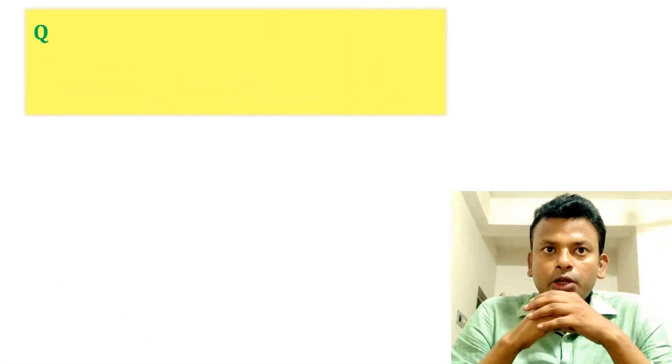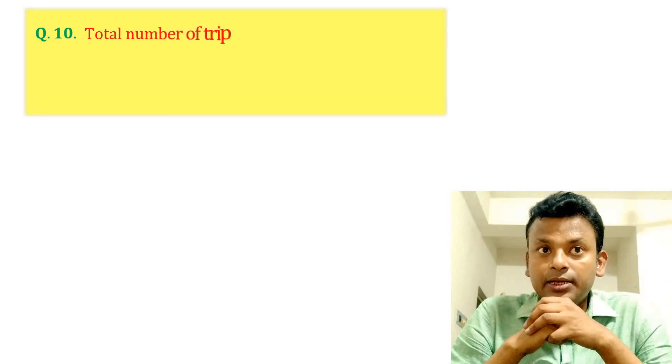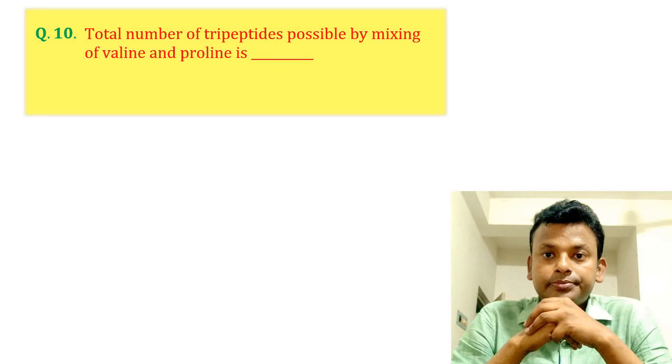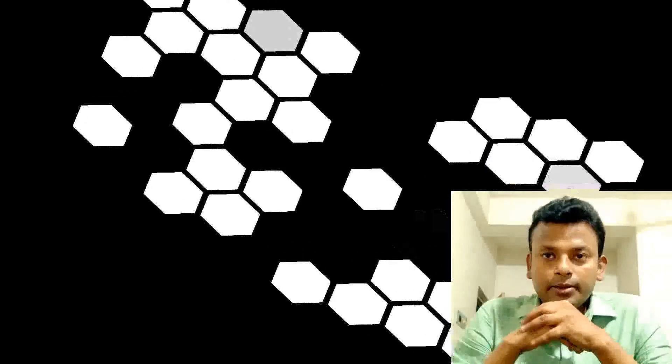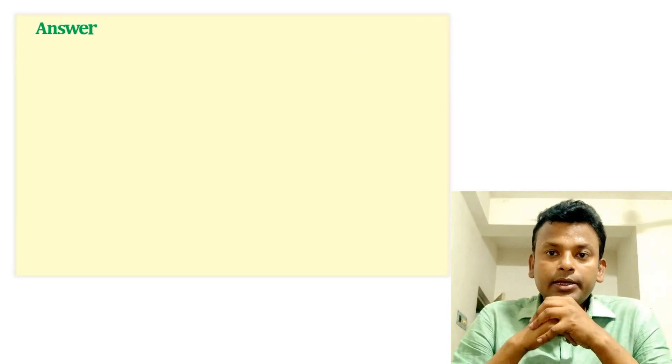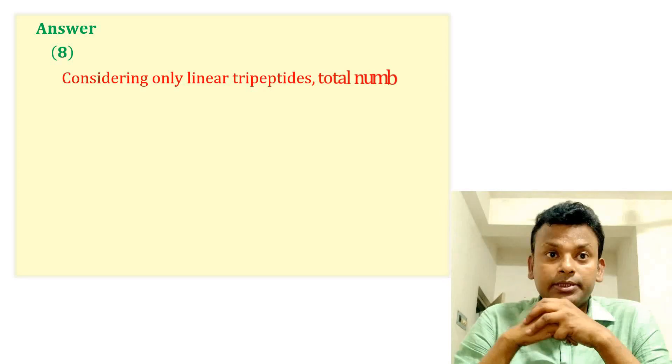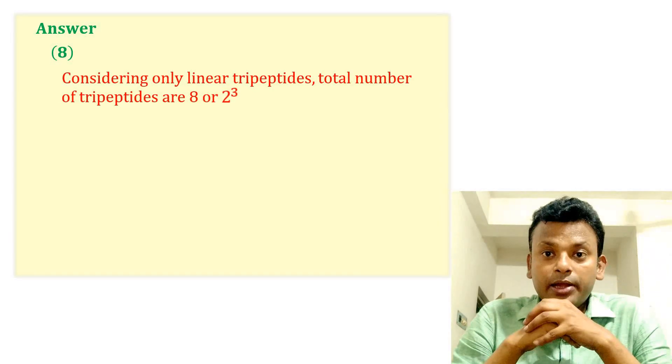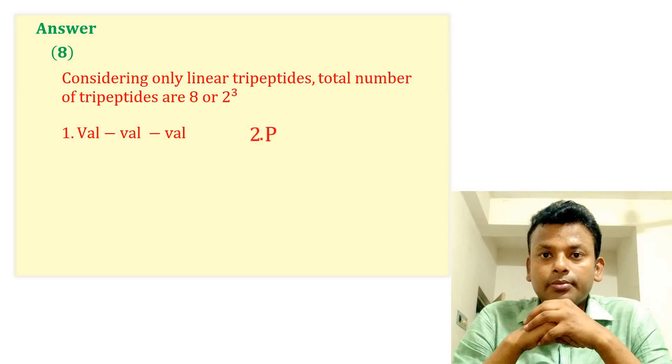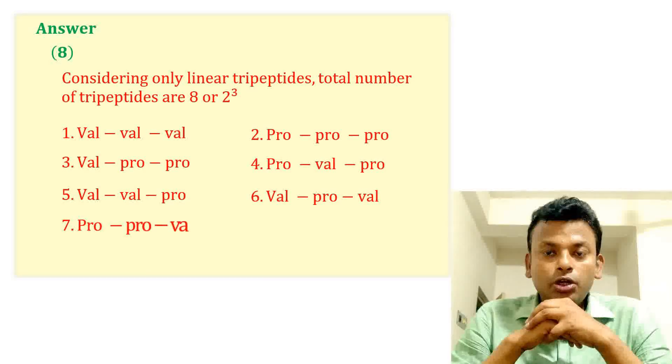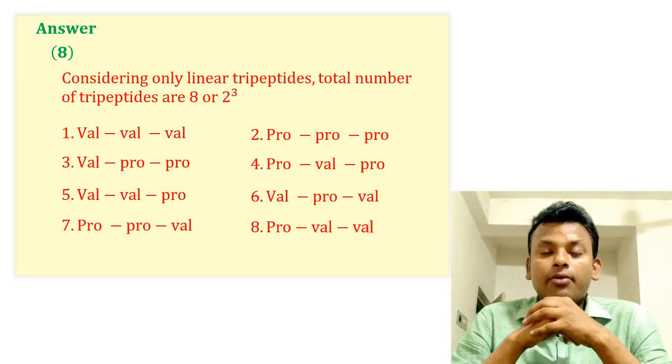Question 10: Total number of tripeptides possible by mixing of valine and glycine is dash. Answer: Answer is 8. Considering only linear tripeptide, total number of tripeptides are 8, that is 2 to the power 3. This is the tripeptide compound. So total number of tripeptides formed are 8.